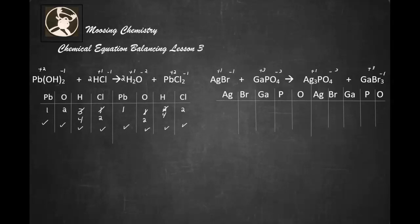How many silvers are we starting with? We have one silver, one bromine, one gallium, one phosphorus, and four oxygens. Now we're going to repeat the pattern. No matter what it looks like on the right, we have to repeat the pattern on the left to keep everything kind of organized.